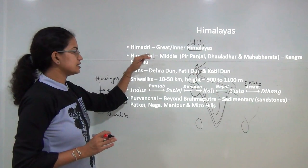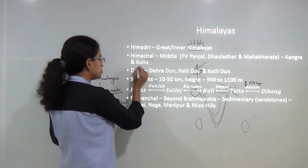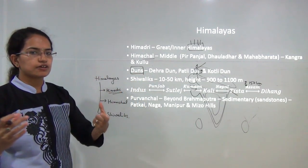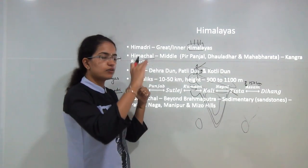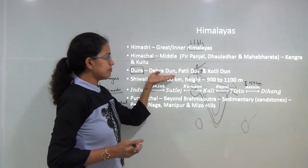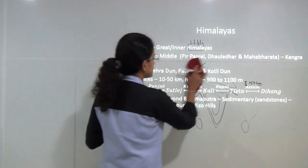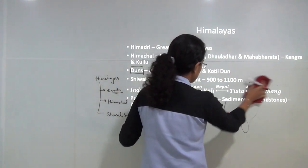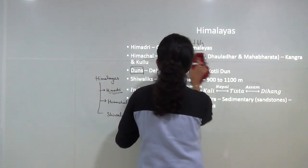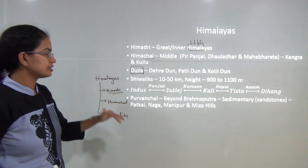Between the middle Himalayas and the Shivaliks there are small hillocks known as Doons. All names ending with 'Doon' refer to regions located on a small hillock — examples include Dehradun, Patlidun, and Kottlidun. These are hill stations which are not as vast as the Himachal range but not as low as the Shivalik range.